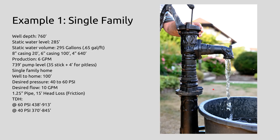So example one, we've got a single family with a well that is 760 feet deep, static water level 285 feet. Our total volume in the well, we've got 295 gallons of pumpable water basically at any given time when the well is full. We've got eight inch casing for the first 20 feet and a six inch casing for the next 100 feet, and then it goes down to a four inch casing for the remainder of the depth. This is a pretty deep well, and it's pretty common to transition to a cheaper PVC type four inch casing. This well is pretty low producing at six gallons per minute, and that kind of shows in the depth — generally, if you get good water, you don't go deeper.